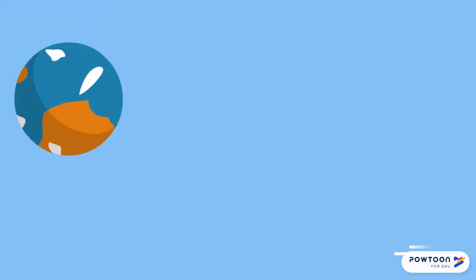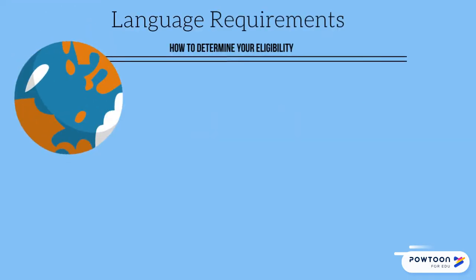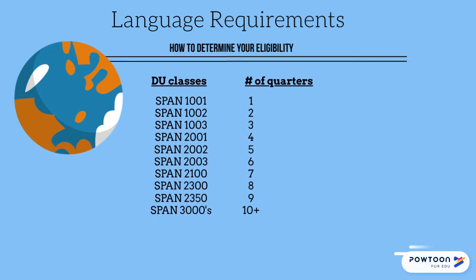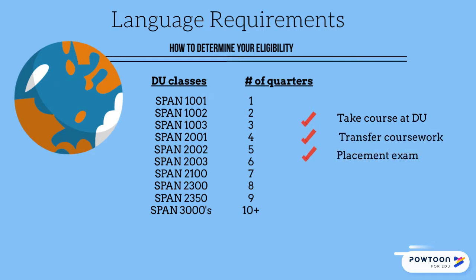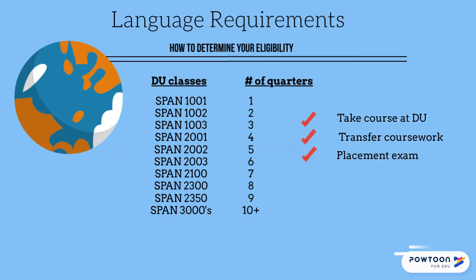Let's start by defining language levels and program requirements. On DU Passport, most programs in the Spanish-speaking world have a language prerequisite that must be met before you go abroad. You should count each quarter of Spanish at DU that you either took at DU, transferred in, or tested out of. So if you test out of the first year of Spanish and then take SPAN 2001, you have four quarters of Spanish. Count all quarters you will have taken before your term abroad, even if you haven't taken those courses by the time you apply. Be aware that some programs require recent Spanish study, so they might not accept you if you haven't taken any Spanish in the last year or so.